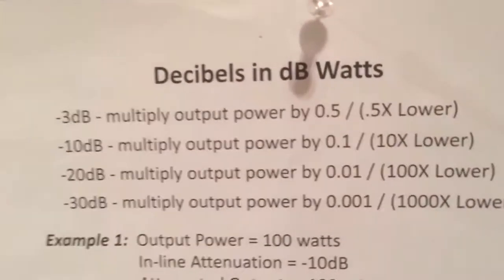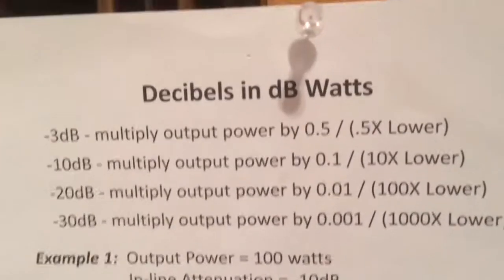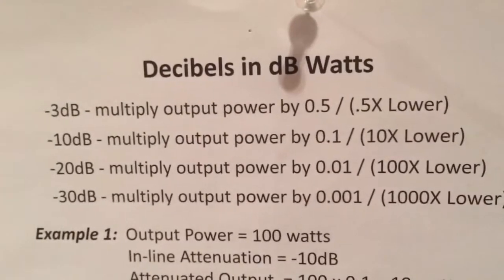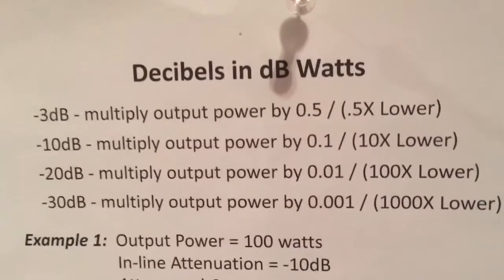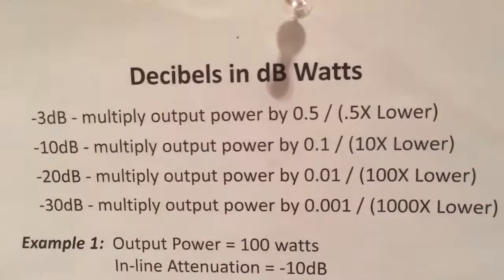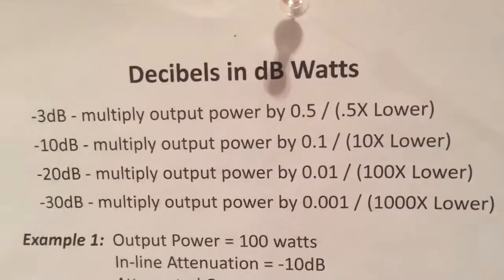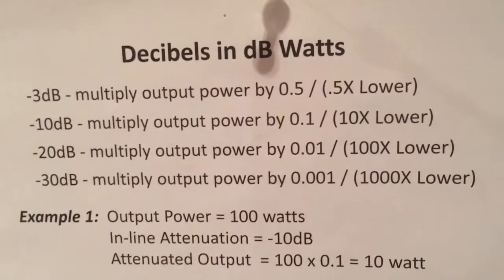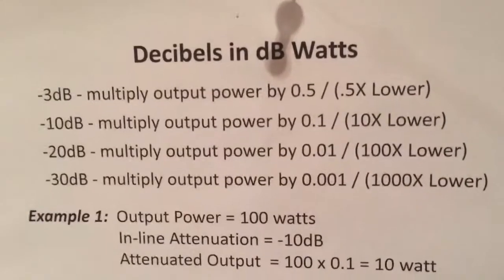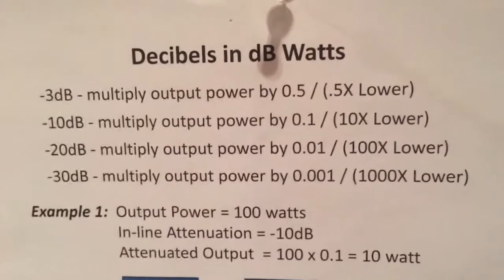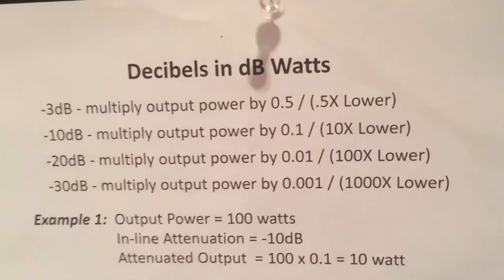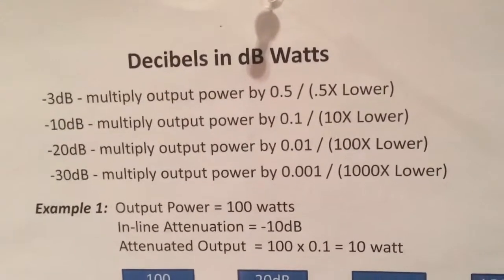Before I go further, I want to review something I've covered in other videos. When we talk about decibels, it can either be gain or loss. In the case of attenuators, we're talking about power loss, so the decibel level is expressed as a negative value. Minus 3 dB, 10 dB, 20 dB, 30 dB are all common values. Minus 10 dB is 10 times lower, minus 20 dB is 100 times lower, minus 30 dB is 1000 times lower. As multiplying factors: -10 dB = 0.1, -20 dB = 0.01, -30 dB = 0.001. It's a logarithmic scale — we're basically just shifting zeros.